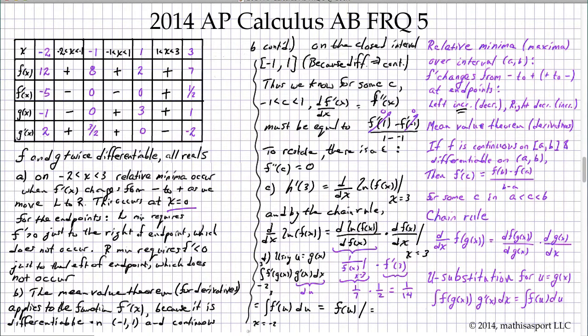What are those corresponding limits? Well, when x is negative 2, what would g of x be? When x is negative 2, g of x is negative 1 from the table. When x is 3, g of x is 1.